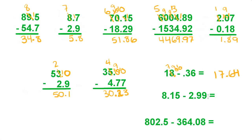Over here we have 5 minus 9 — we have to borrow from the 1. Make it a 0, make that a 15. 15 minus 9 is 6. 0 minus 9 — we have to borrow from the 8. Make that a 7, make that a 10. So 10 minus 9 is 1. We have the decimal points — add that in. And then 7 minus 2 is 5.